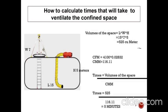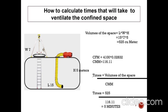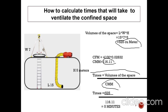We have already found the volume of the space, which is 525 cubic meters, and the CMM of the ventilation blower, which is 116.11. Using the formula: time equals volume of the space divided by CMM, time equals 525 divided by 116.11, and the answer is approximately 5 minutes.